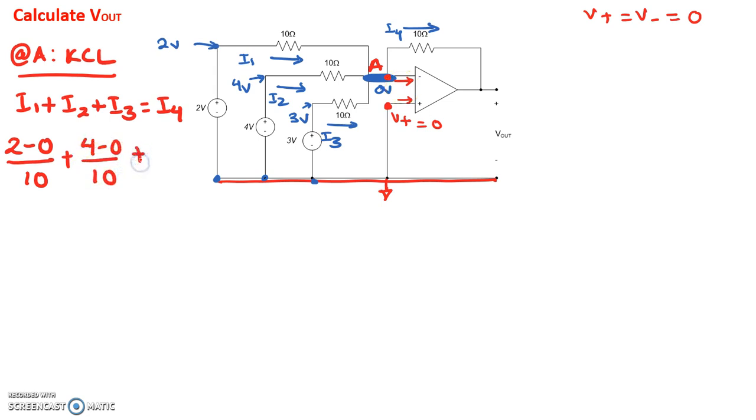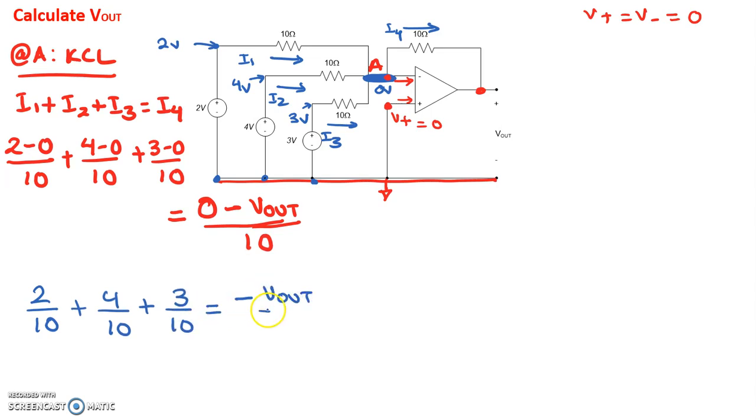And I3 is three minus zero divided by 10. And that is all equal to I4, which is node A, which is zero volts, minus this node is Vout, divided by 10 ohms. So if I write this properly, I have 2/10 + 4/10 + 3/10 = -Vout/10.